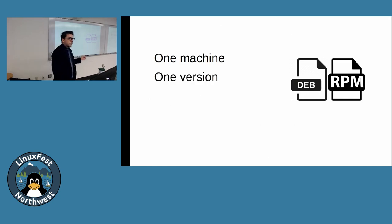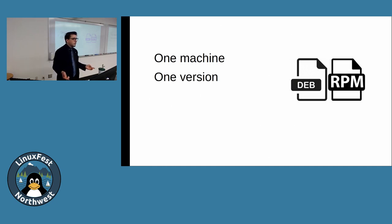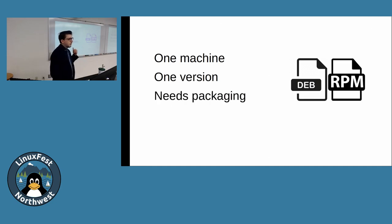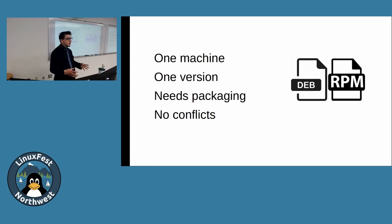Only one version can be installed at a time — if I install foobar 1.0 and upgrade to foobar 1.1 which deprecates features from 1.0, I can't use 1.0 anymore. Additionally, every package you install needs to be packaged by someone, and most software that's written isn't packaged. You also can't have conflicts: if Scientist A needs foobar and Scientist B needs foobaz and they conflict, someone is going to be upset — and that someone is going to be me.